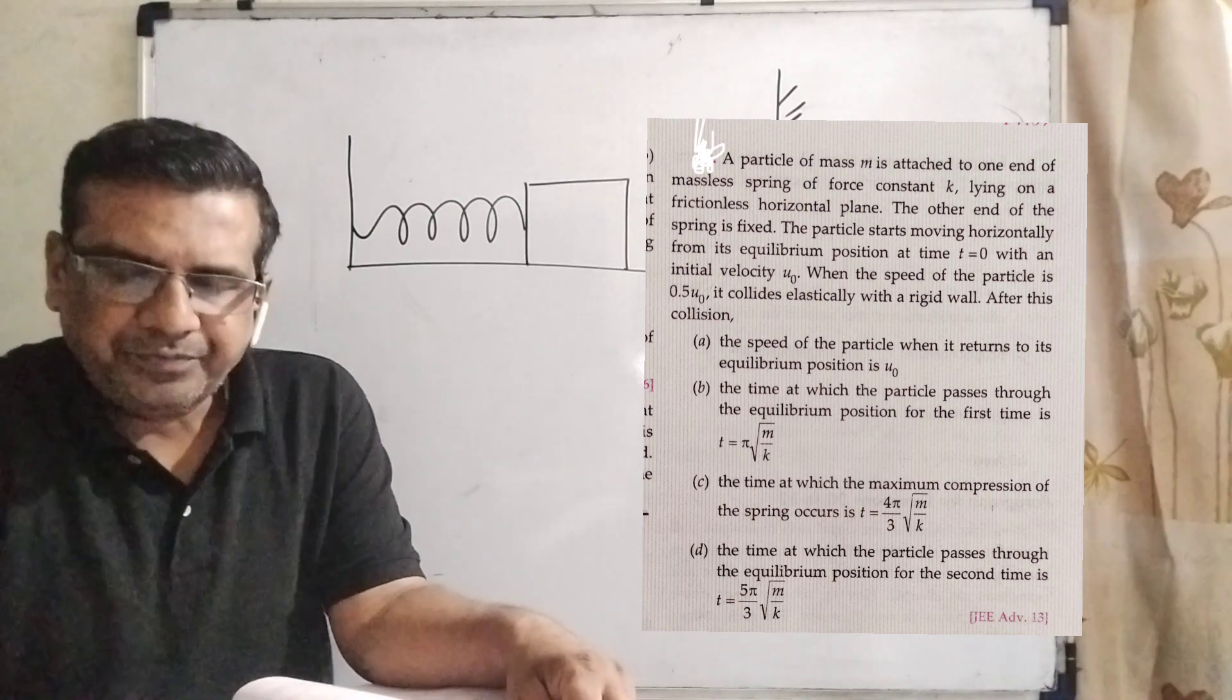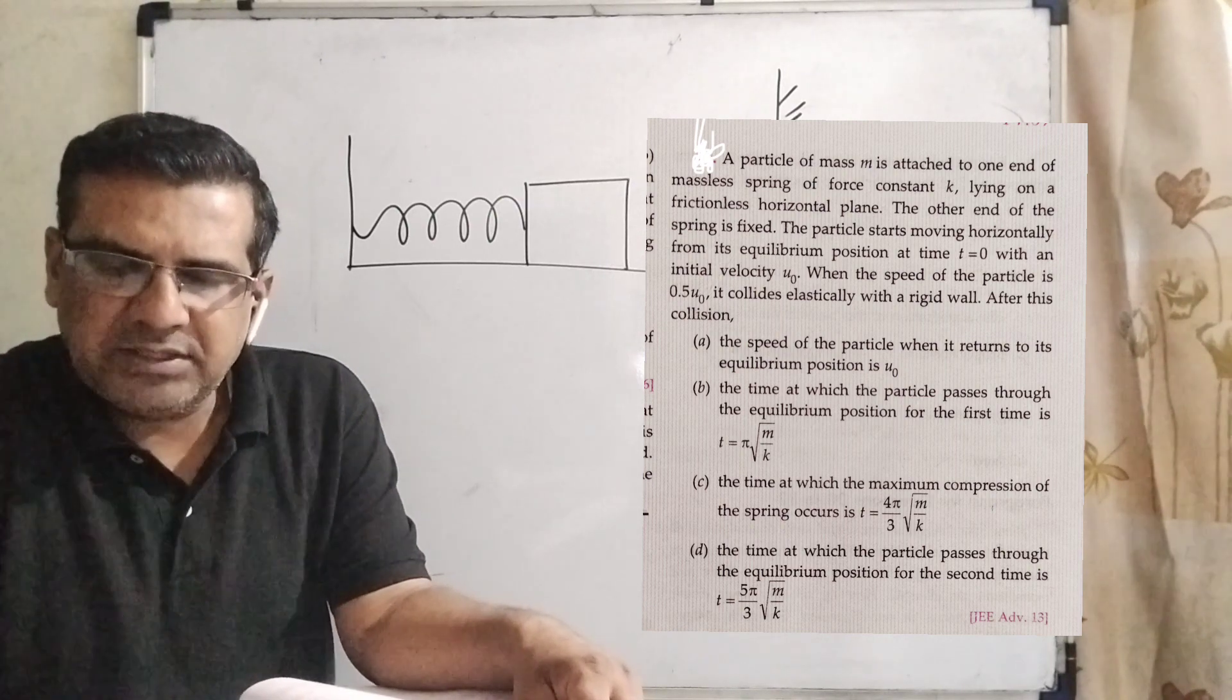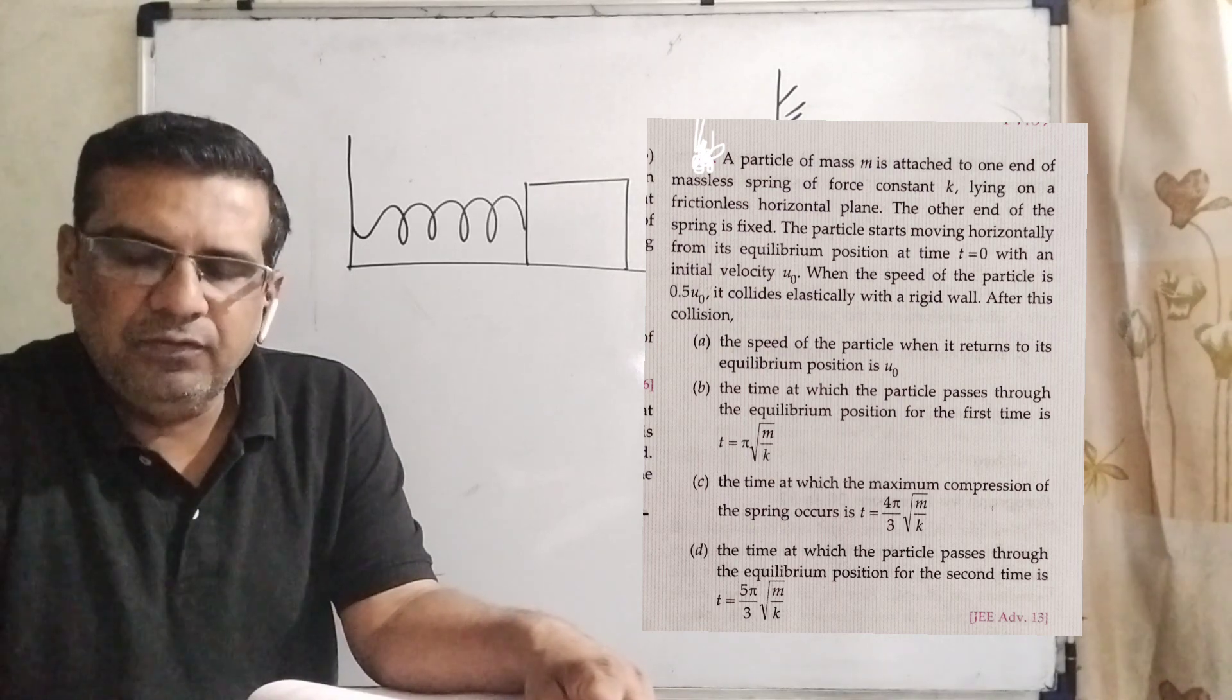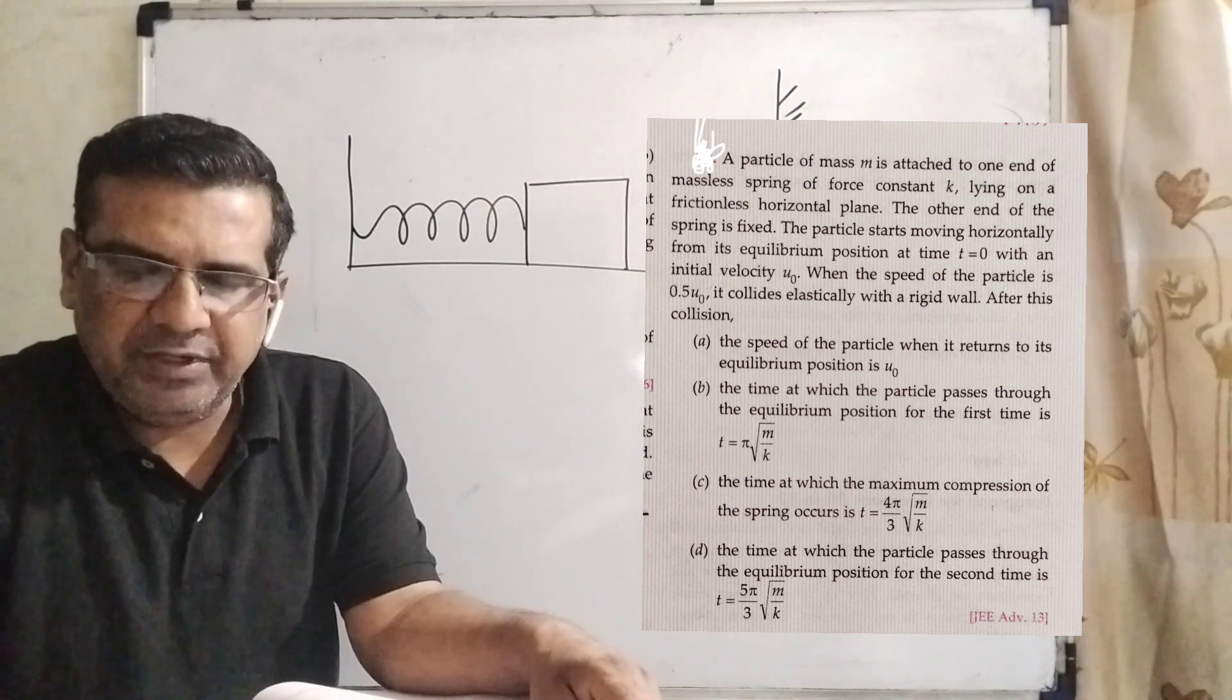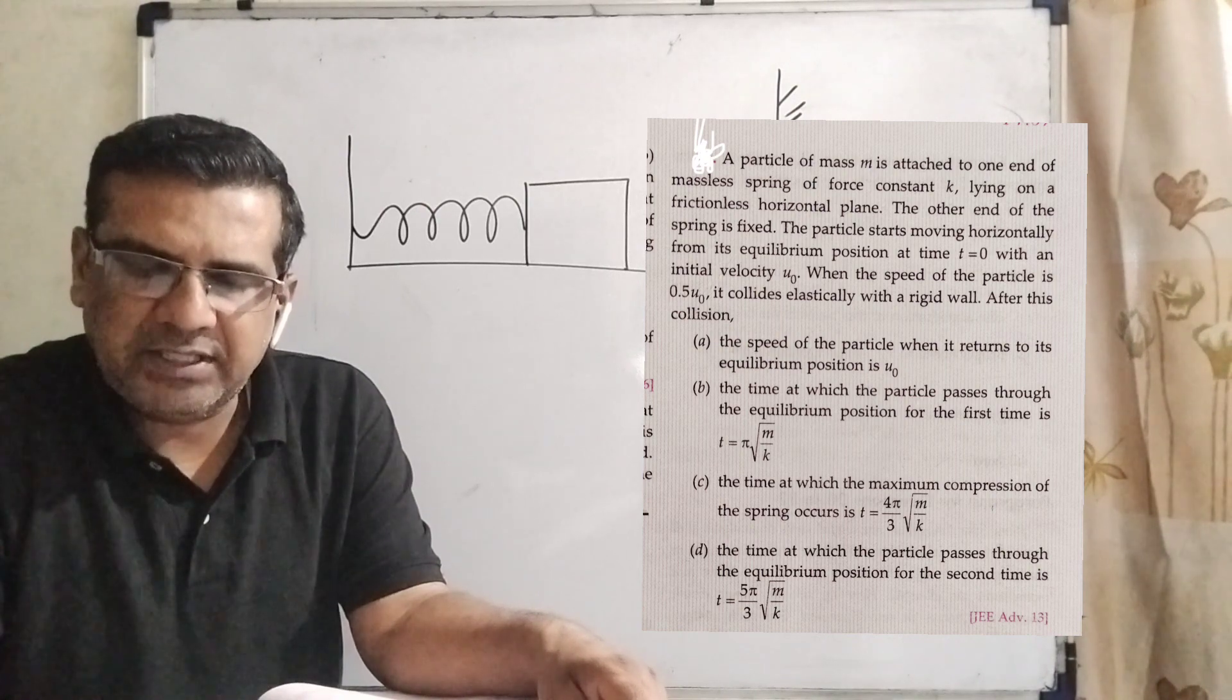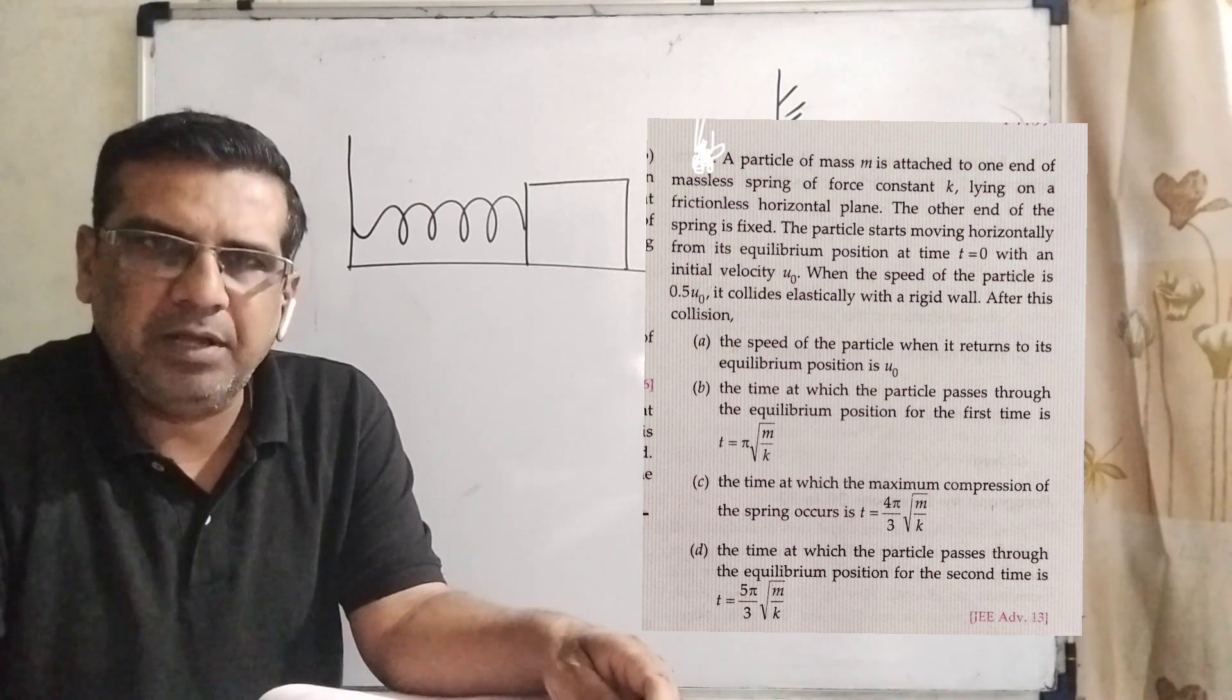Option C: The time at which the maximum compression of the spring occurs is t equal to 4 pi by 3 root m by k. And Option D: The time at which the particle passes through the equilibrium position for the second time is t equal to 5 pi by 3 root m by k.